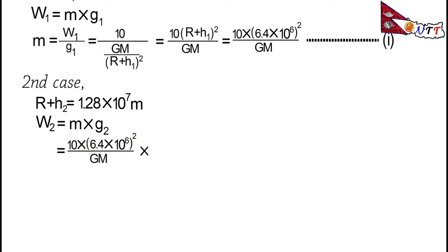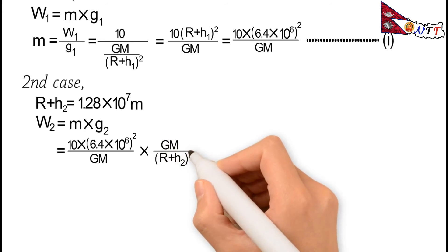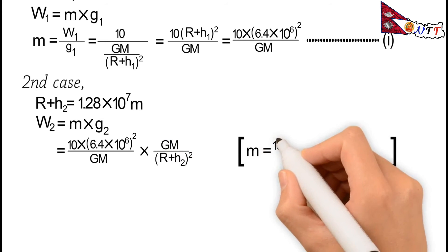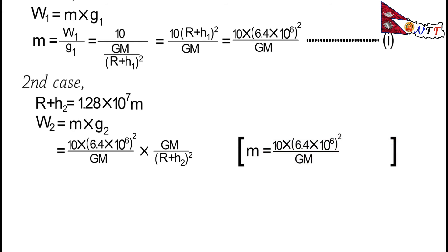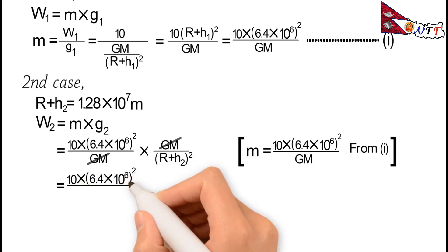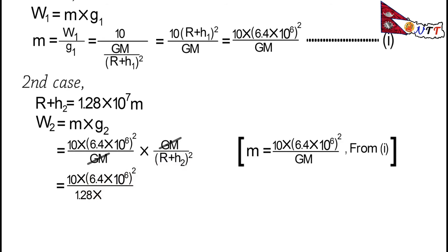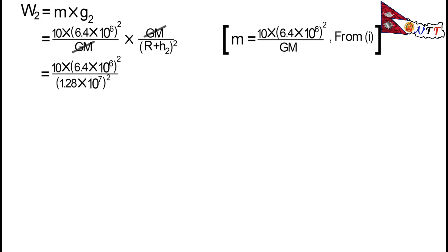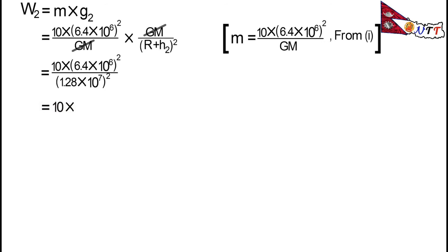We can write the acceleration due to gravity g₂ = GM / (r + h₂)². For W₂ = m × g₂, substituting m from Equation 1: W₂ = [10 × (6.4 × 10⁶)² / GM] × [GM / (1.28 × 10⁷)²]. The GM terms cancel, giving W₂ = 10 × (6.4 × 10⁶)² / (1.28 × 10⁷)².